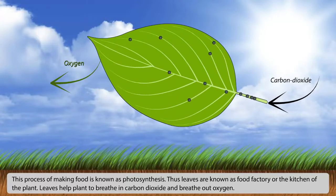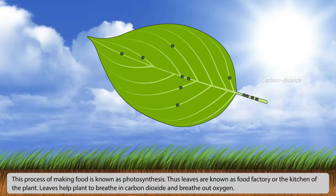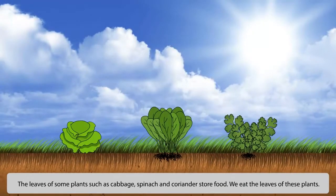Thus, leaves are known as the food factory or the kitchen of the plant. Leaves help plants breathe in carbon dioxide and breathe out oxygen. The leaves of some plants such as cabbage, spinach and coriander store food. We eat the leaves of these plants.